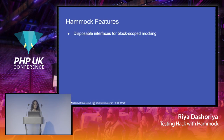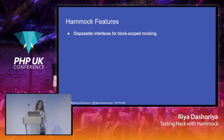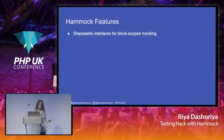Some of the features of Hammock include a disposable interface for block-level mocking. When you create a mock, we are calling FB Intercept under the hood, and at the end of the lifecycle of that mock we are deactivating and deleting all the mocks. So other test suites won't be affected. If you're using FB Intercept directly and not removing it, there's a great chance other tests will be affected. However, if you're using Hammock, no other tests will be affected.